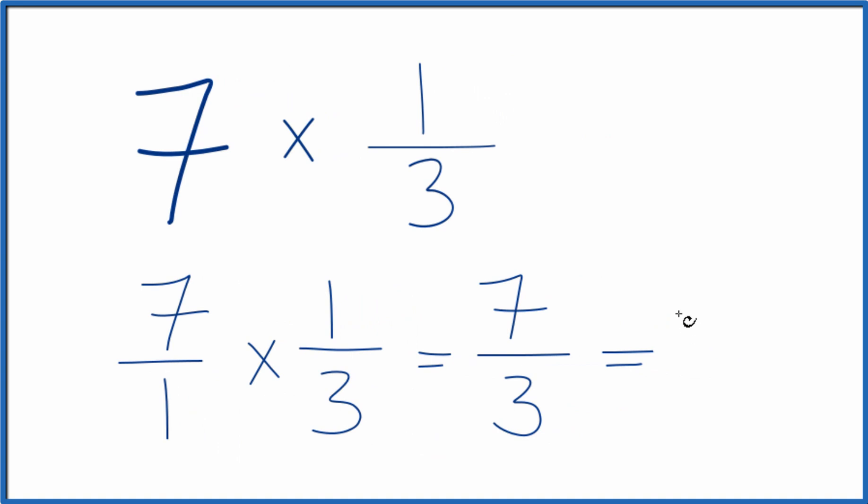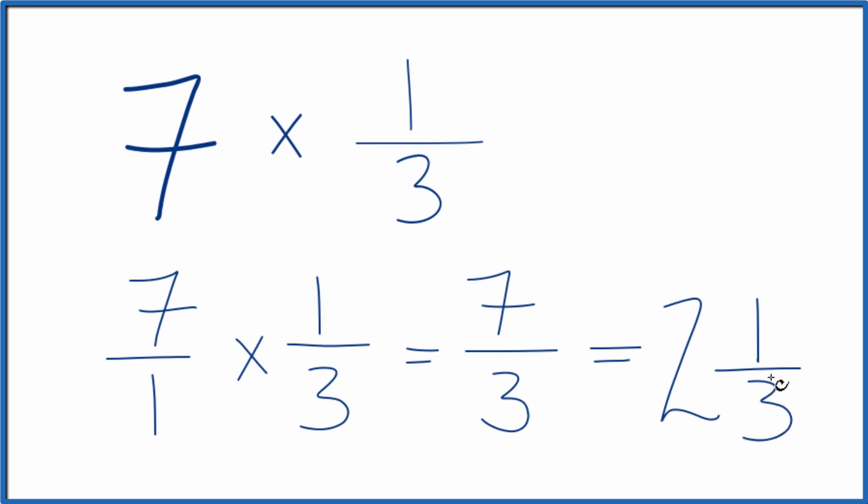Three goes into seven two times. Two times three, that's six, then we have one left over, bring the three across, and as a mixed number, seven-thirds equals two and one-third.